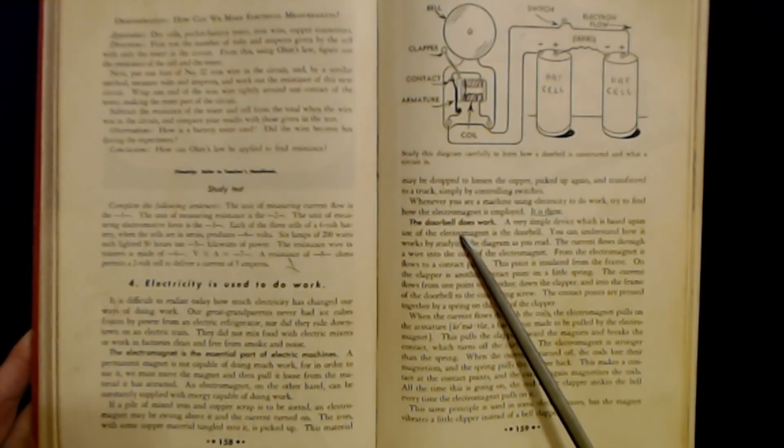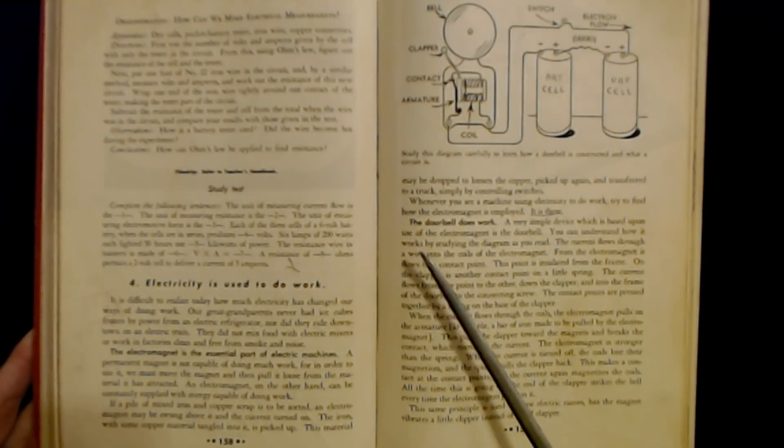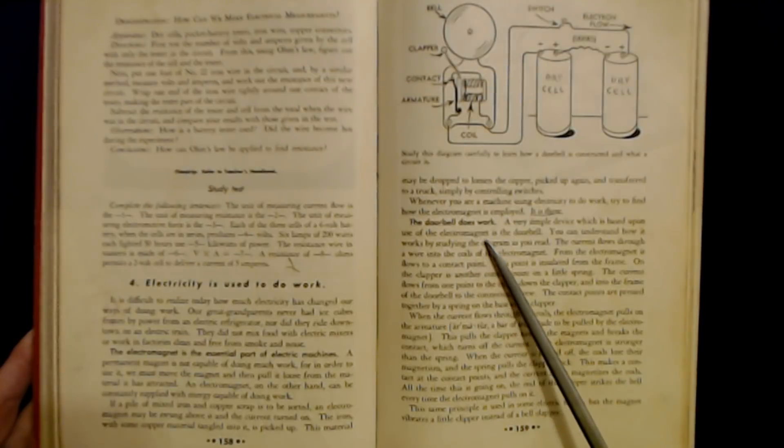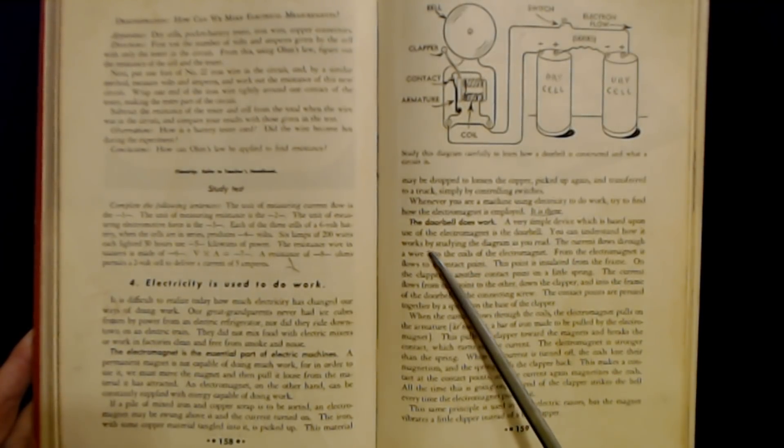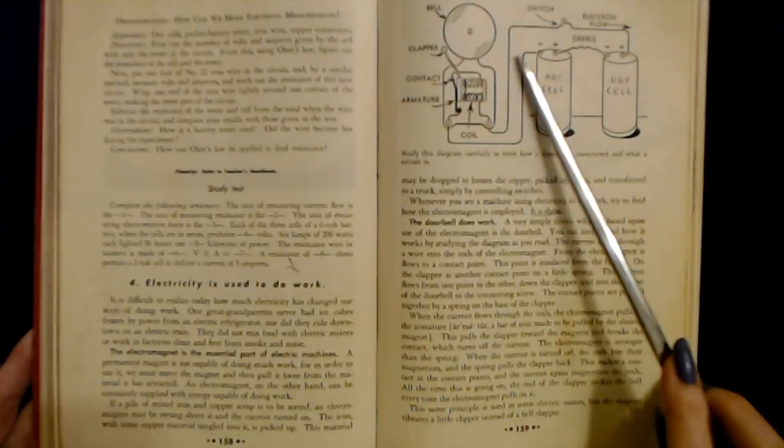The doorbell does work. A very simple device which is based upon the use of the electromagnet is the doorbell. You can understand how it works by studying the diagram as you read.